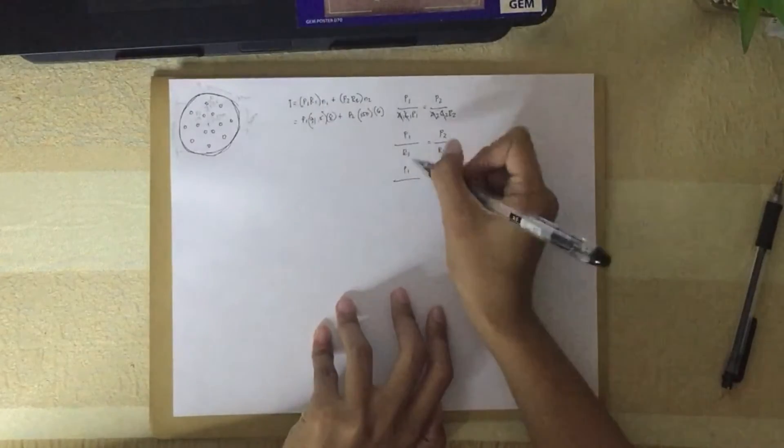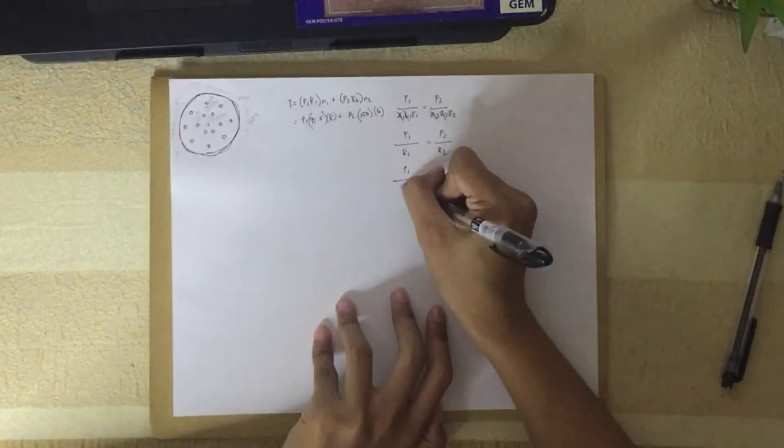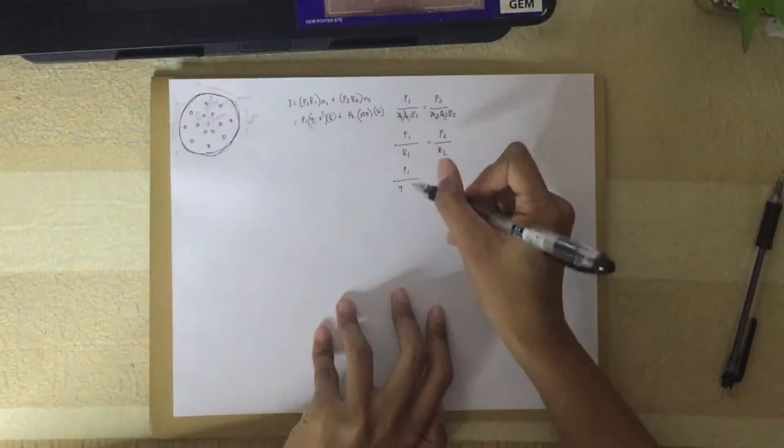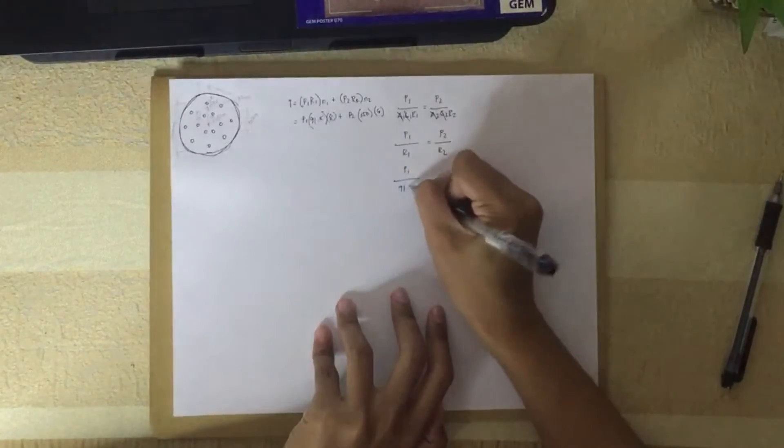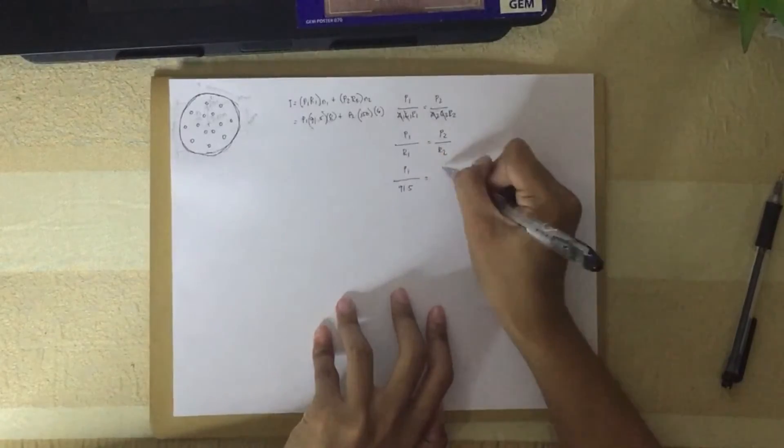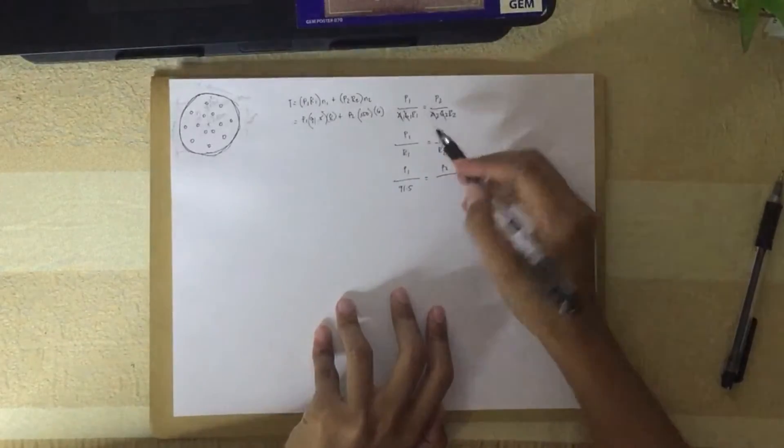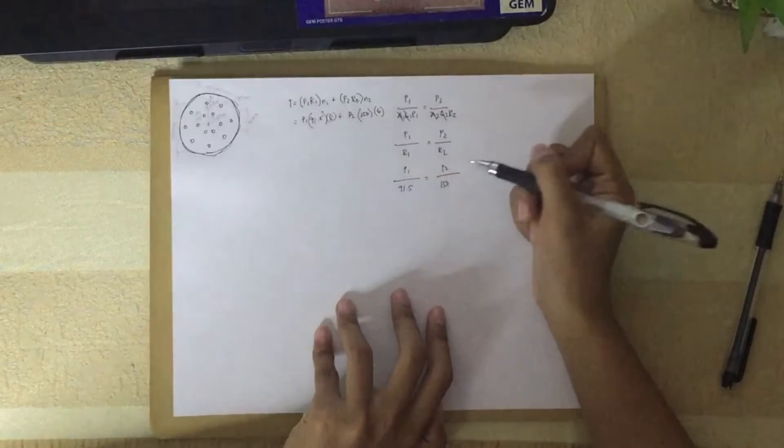Substituting, P1 over R1, the radius of outer bolt is 91.5, equals P2 over R2, which is 150.